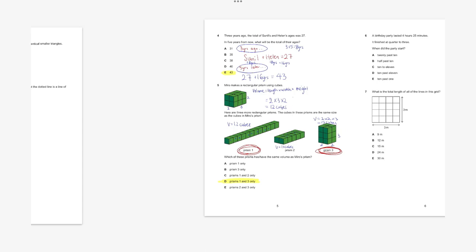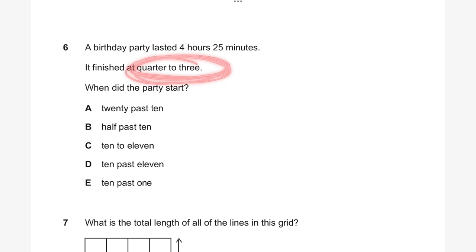Having a look at question six. A birthday party lasted four hours and 25 minutes. It finished at quarter to three. When did the party start? First, let's work out what quarter to three is in digital time. Quarter to three means a quarter of an hour — 15 minutes — until three o'clock, which means the time is 2:45 PM. That's when it ended. We want to find out what time the party started, so we work backwards.